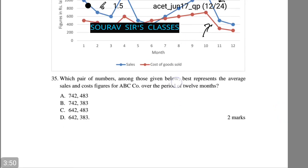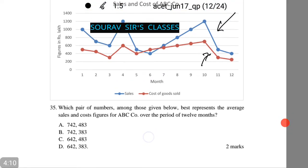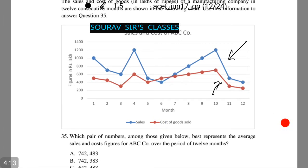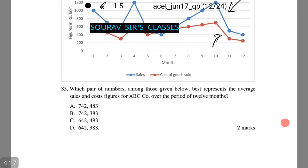Let's see what the first question asks of us. Which pair of numbers among those given below best represent the average sales and cost figure for ABC company over the period of 12 months? Let's see the graph. Now we notice the values given to us. First we check the minimum number of average sales.